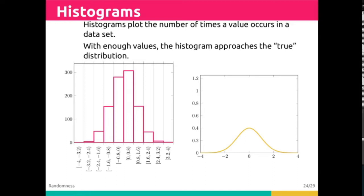Histograms are good for telling us the relative frequencies of different samples of things inside of a particular category. Histograms plot the number of times a value occurs in a data set. With enough samples, the histogram will approach the true distribution.